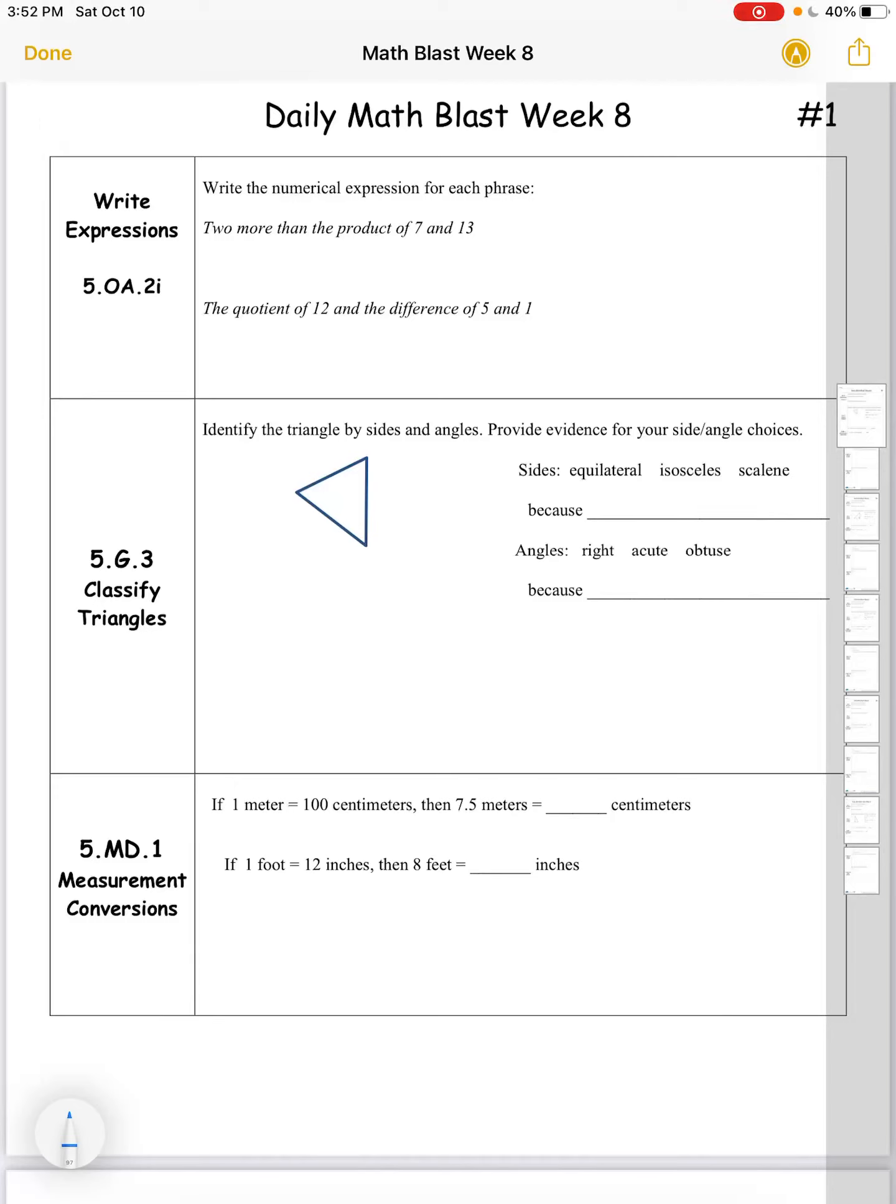Math Blast Week 8. Write expressions. Write the numerical expression for each phrase. Two more than the product of 7 and 13. A product is the answer to a multiplication problem. So I know I want to multiply 7 and 13 to get that product, and I want two more than that, so I can add two. Or I could write that as two added to 7 times 13. Either way would be okay.